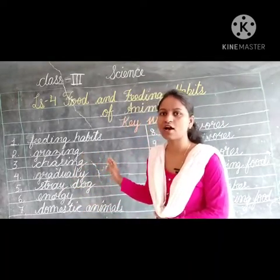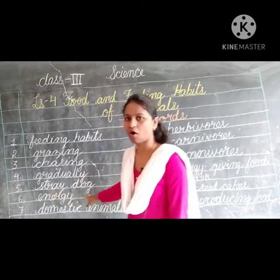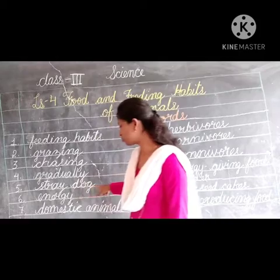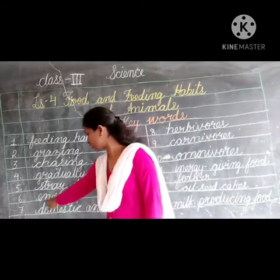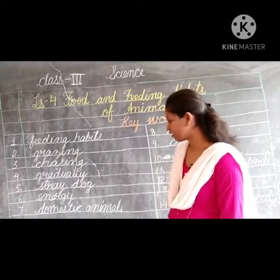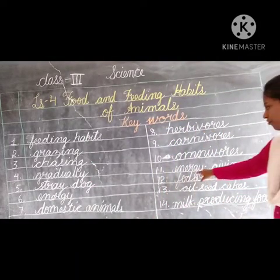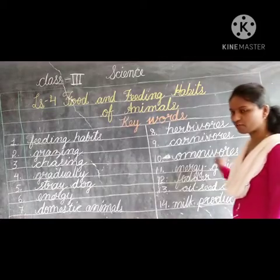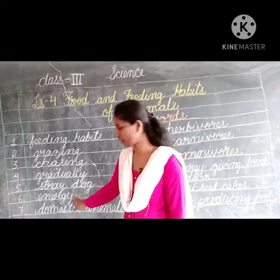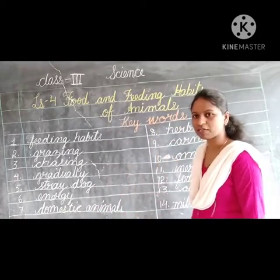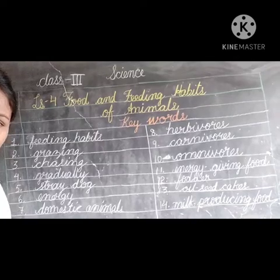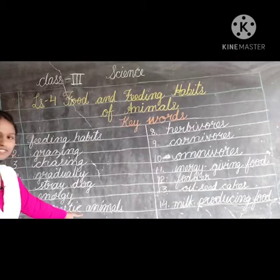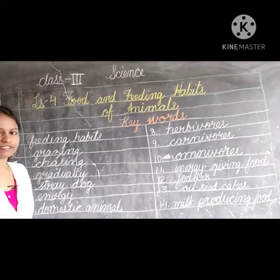Next one is 'stray dog' - the dog which lives in the streets. S-T-R-A-Y, stray, D-O-G, dog. Next one is 'energy' - E-N-E-R-G-Y. You can see here: energy-giving food - E-N-E-R-G-Y, giving, G-I-V-I-N-G, F-O-O-D, food. Next, 'domestic animals' - D-O-M-E-S-T-I-C, domestic, A-N-I-M-A-L-S, animals.